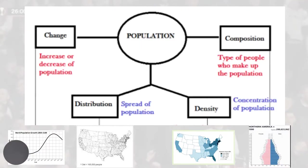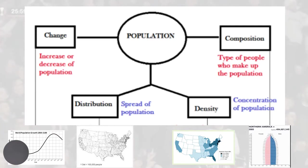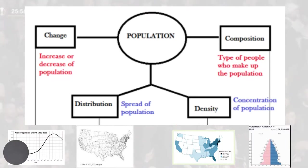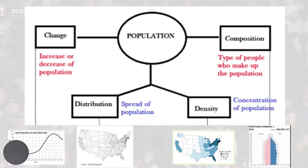These four aspects of population may be illustrated by different methods. A dot map may be used to illustrate population distribution. A choropleth map illustrates population density. A population pyramid represents the population structure, while line graphs may be used to illustrate population change.